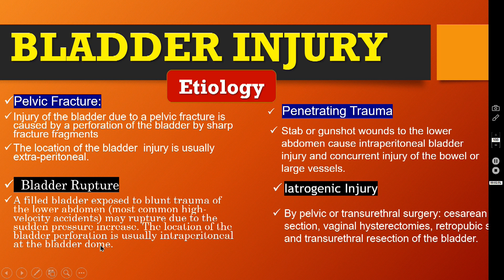The location of the bladder perforation is usually intraperitoneal at the bladder dome. Penetrating injury — stab or gunshot wounds to the lower abdomen — can cause intraperitoneal bladder injury and concurrent injury of bowel or even large vessels. Iatrogenic injury by pelvic or transurethral surgery, including caesarean section, vaginal hysterectomies, retropubic surgery, and transurethral resection of the bladder are surgeries notorious for producing injury to the bladder. That is why it is called iatrogenic injury.